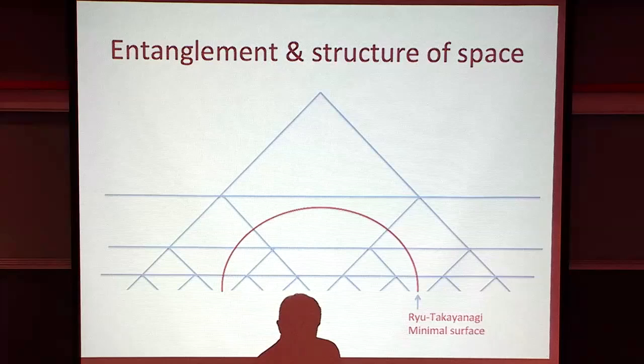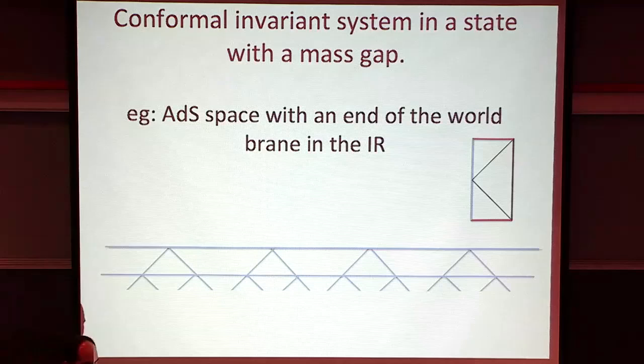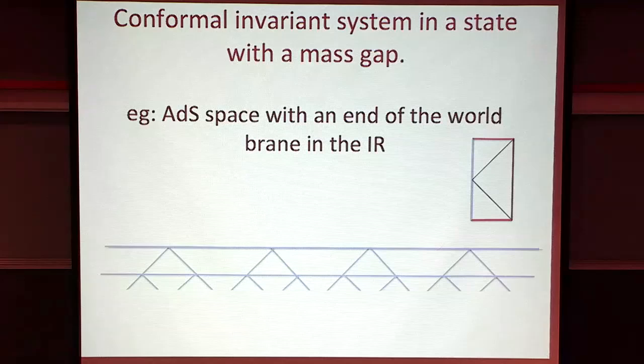You can also use this to describe states of a CFT. The tensor network is not a property of the CFT, but a property of the state in the CFT - you're trying to represent particular states. In particular, you can consider a state of the CFT that itself has a mass gap - a state with short-range correlations or short-range entanglement.